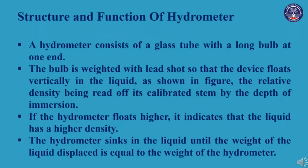A hydrometer consists of a bulb with a long stem at one end. The bulb is weighted with lead shot so that the device floats vertically in the liquid, as shown in the figure. The relative density is read from the calibrated stem by the depth of immersion.